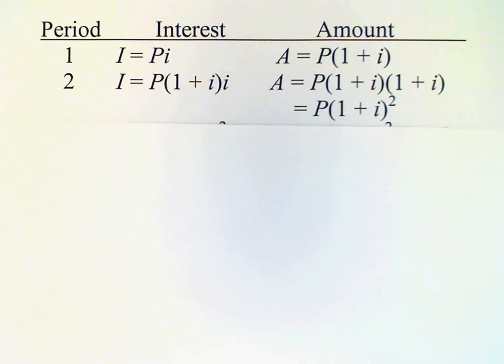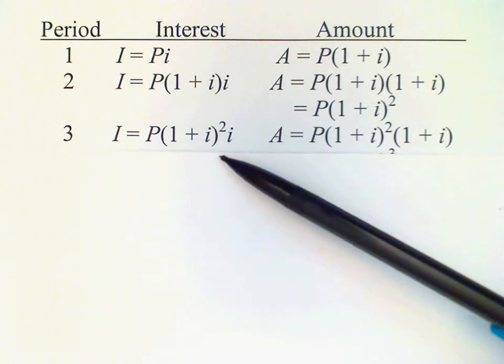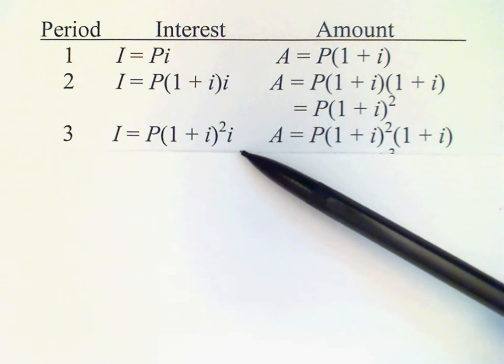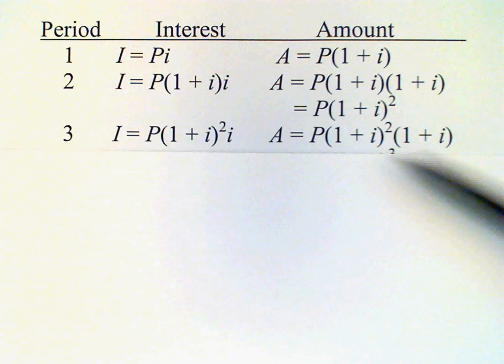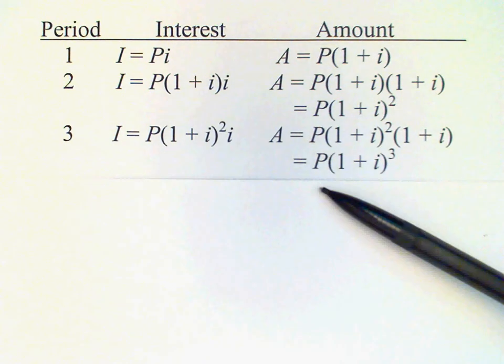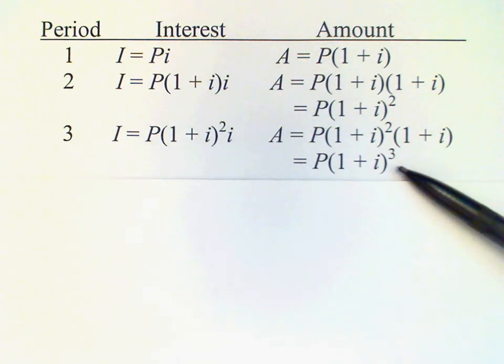This amount now becomes the principal in the third period: P times one plus i to the second power. Then again multiplied by i to get the interest for the third period. Add back to the principal and we have another factor of one plus i. That condenses the formula down to P times one plus i raised to the third power.